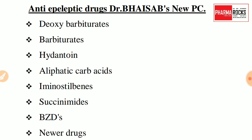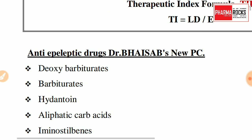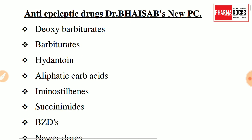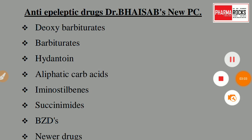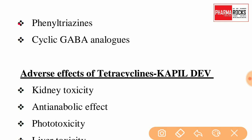Starting from Doctor: D - Deoxybarbiturates, B - Barbiturates, H - Hydantoin, A - Aliphatic Carboxylic Acid, I - Iminostilbenes, S - Succinimides, B - Benzodiazepines, and N - Newer Drugs. After New comes PC: P stands for Phenyltriazines and C stands for Cyclic GABA Analogs. So the complete trick 'Dr. Biceps New PC' covers all Anti-Epileptic Drug classes.